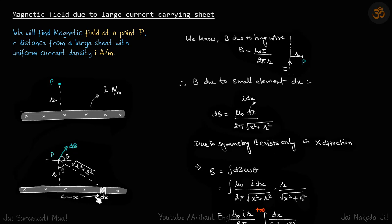This is R, this is x, this is root x squared plus R squared. Let's say this angle is theta, so this is also theta. Now we already know the formula for the field at distance R from a current carrying wire. It is μ₀i/(2πr).